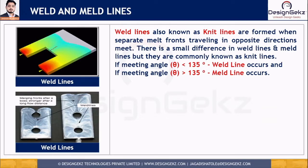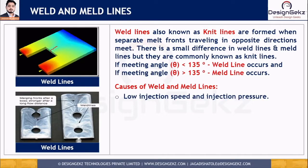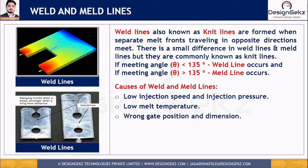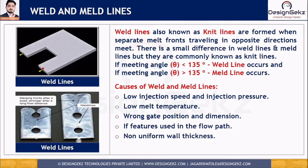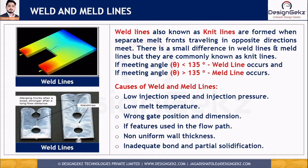The weld and melt line defect is caused by operating conditions such as low injection speed, low injection pressure, and low melt temperature. It is also caused by wrong gate positions and wrong gate dimensions, or by holes and inserts used in the flow path. If the design requires holes or inserts at that location, it is the mold designer's responsibility to relocate the gate. Non-uniform wall thickness and inadequate bonding between flow fronts, including partial solidification of molten plastic, also lead to this defect.